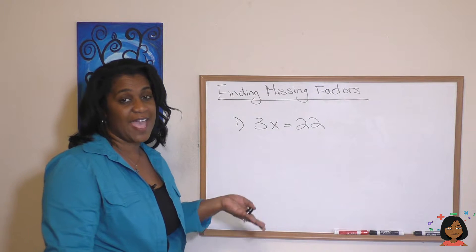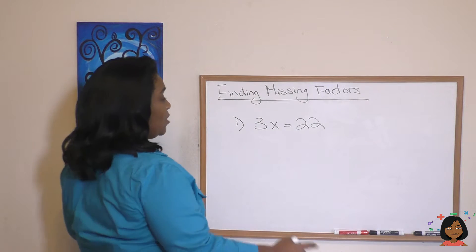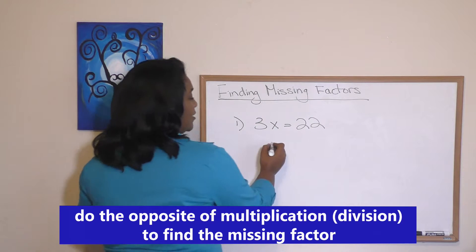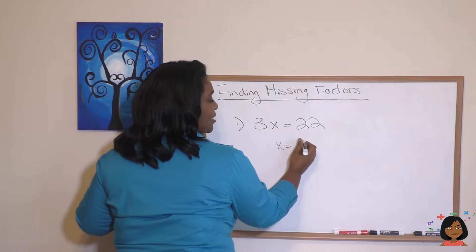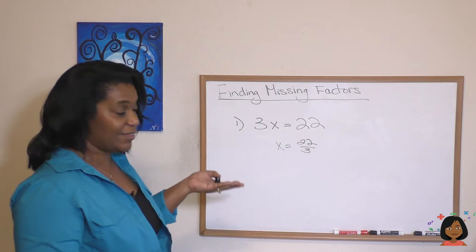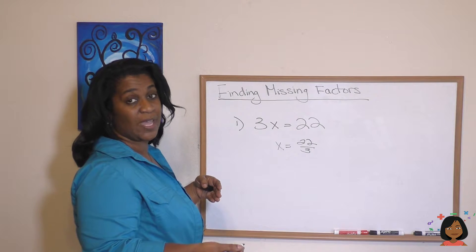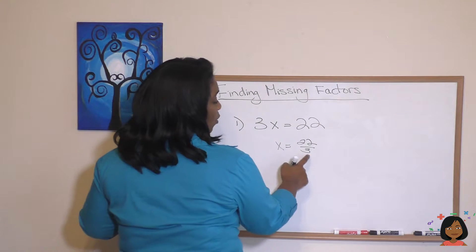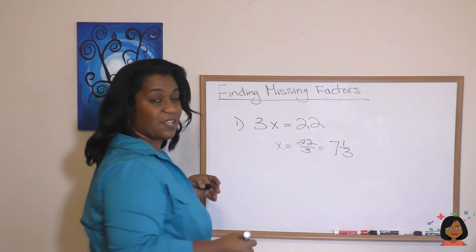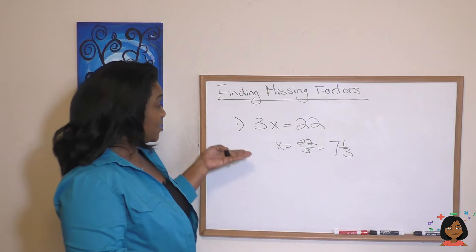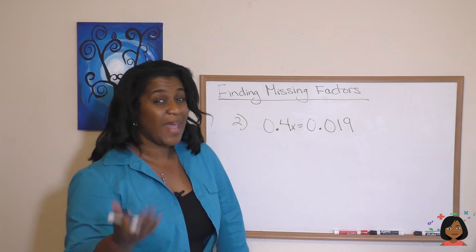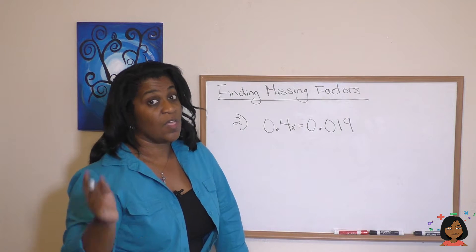Take a look at this example: 3x = 22. We still do the same thing — we do the opposite of multiplication, we divide. So x = 22 over 3. Rather than leaving it like that, let's turn it into a mixed number. 3 goes into 22 seven times with one left over, so seven and one-third is your answer. It is okay to have a mixed number as a missing factor.